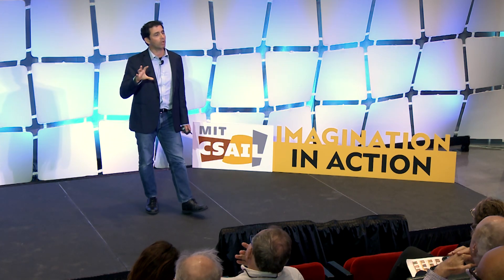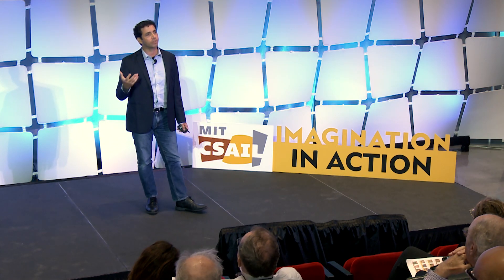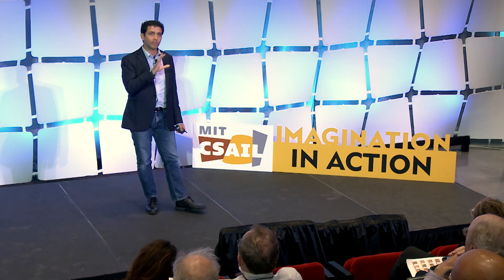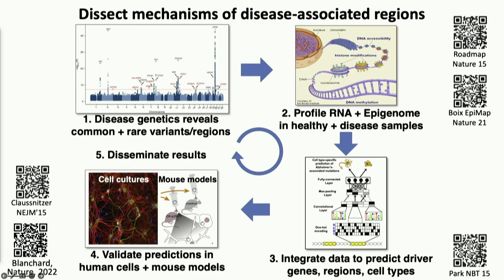That's where AI begins. AI begins with data. We have the genetics, we have the molecular phenotypes, and we can now start integrating the data sets together. We can basically ask: what are the driver genes, regulatory control regions, and cell types that are mediating the effect of the genetic variants?